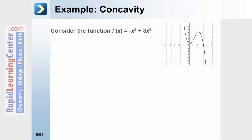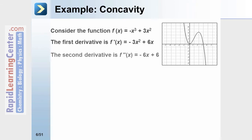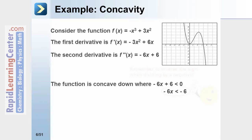Consider the function f(x) = −x³ + 3x². The first derivative would be −3x² + 6x, while the second derivative would be −6x + 6. If we're interested in finding where the function is concave down, we'll take the second derivative and make it less than 0.